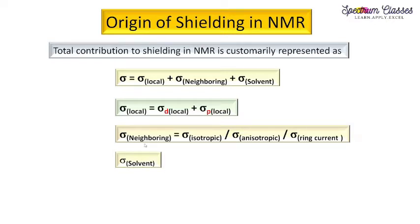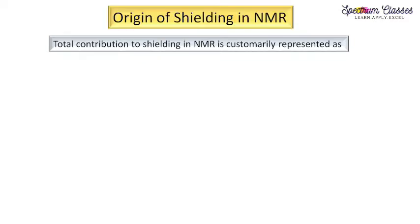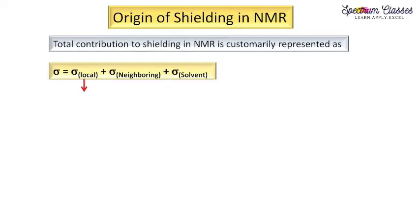In this video we are going to discuss sigma local — specifically sigma d local plus sigma p local — and which parameters contribute to these terms. In the next video we will discuss sigma neighboring: isotropic, anisotropic, and ring current. Sigma solvent has already been discussed in a previous video. So let's start with sigma local, which is the sum of sigma d local plus sigma p local.